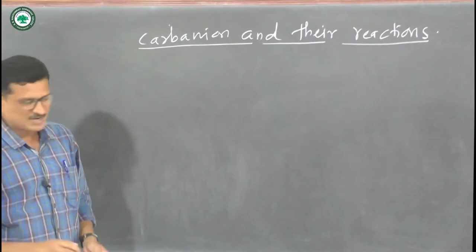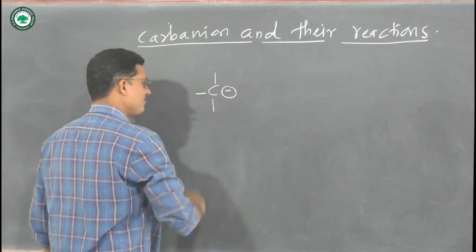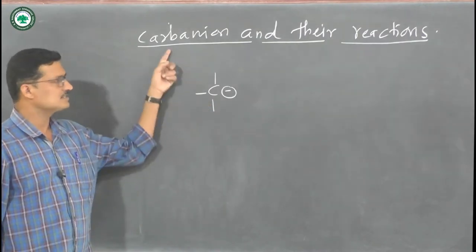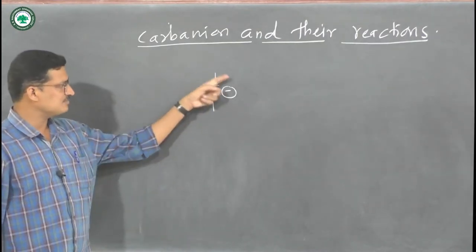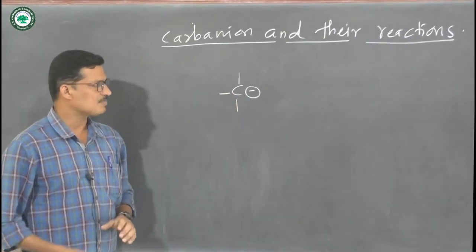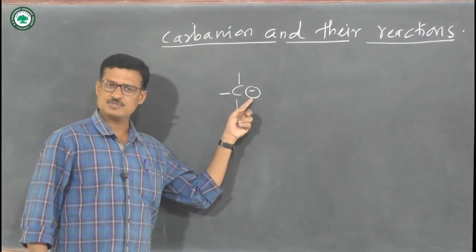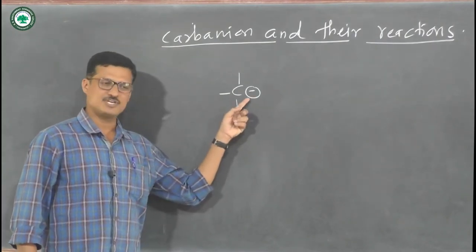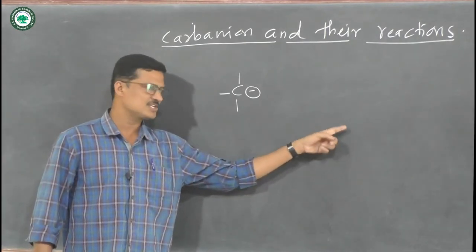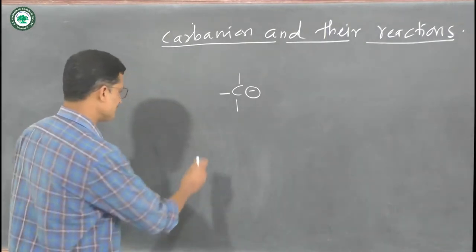What is meant by a carbanion? An organic species in which carbon carries a negative charge is called a carbanion. Any organic species which has a carbon carrying a negative charge is called a carbanion. It is an electron-rich species because the carbon has two extra electrons — this negative charge is nothing but two electrons. The carbocation we discussed is an electron-deficient species, whereas the carbanion is electron-rich.